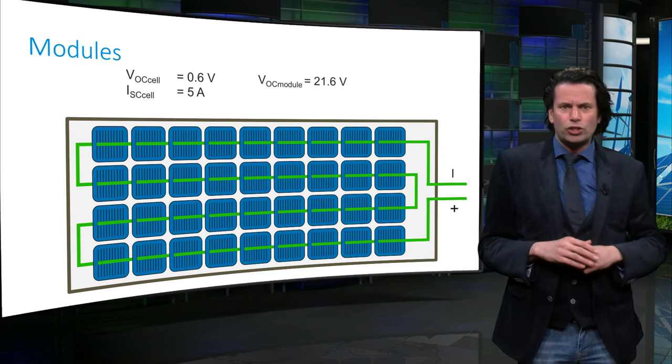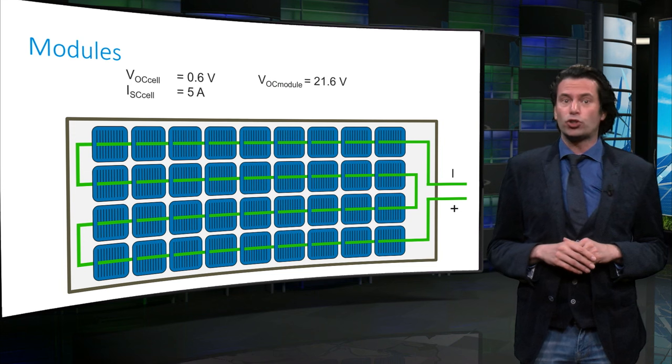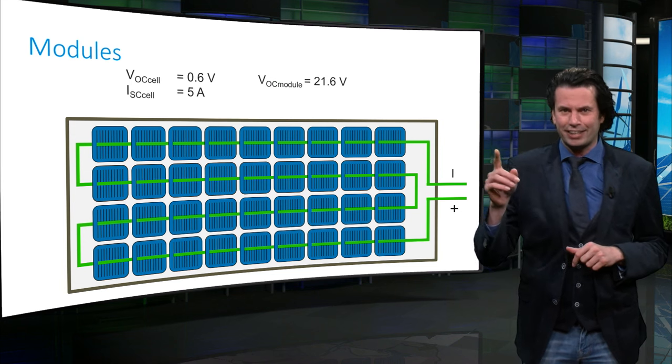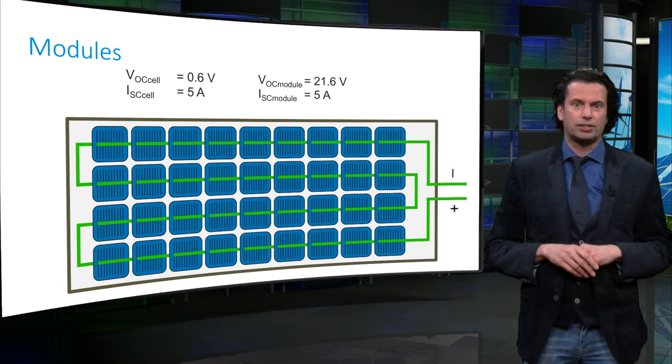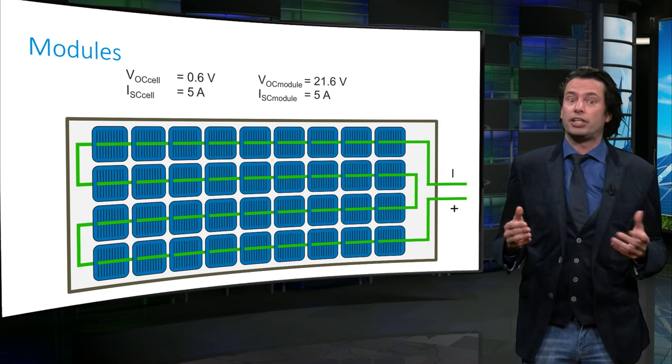What do you think should be the overall module short-circuit current now? Exactly, 5A, because the current remains constant in a series connection.